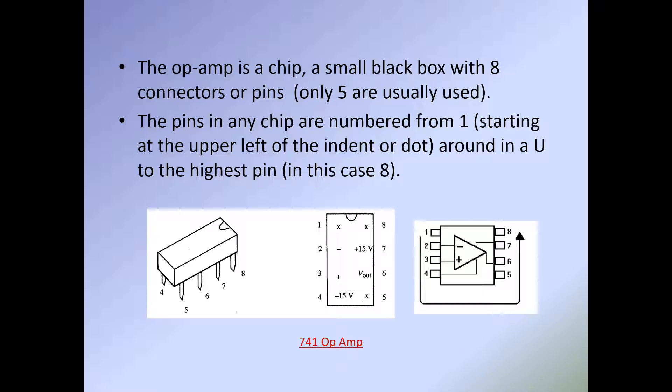The pins on any chip are numbered starting at the upper left of the indent or dot and going around in a U-shape to the highest pin — you should have learned this in digital. We always count from left to right in a U-shaped format. As you can see on our op amp, we have eight pins: pin 1 starts on the top left and goes around to pin 8 on the top right.